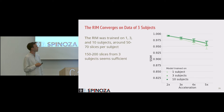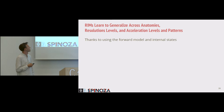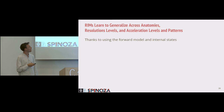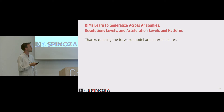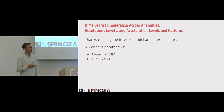To conclude: recurrent inference machines learn to generalize well across anatomies, at least going from brains to knees, and they generalize well across resolution levels, acceleration levels, and acceleration patterns. We think this has a lot to do with the forward model being passed as input to the network, along with the previous state to evaluate the prior distribution and the internal states — each input provides the algorithm with knowledge about image statistics. The U-Net needs to compensate for those image statistics through its parameters, whereas the RIM is more invariant. Regarding parameters: the U-Net has 1.3 million, while the RIM only needs 94,000 due to the recurrent architecture.